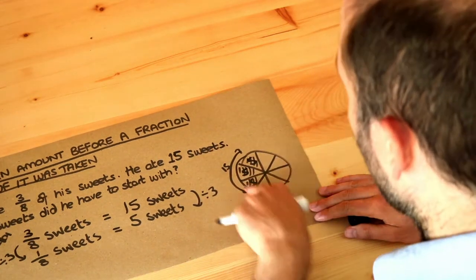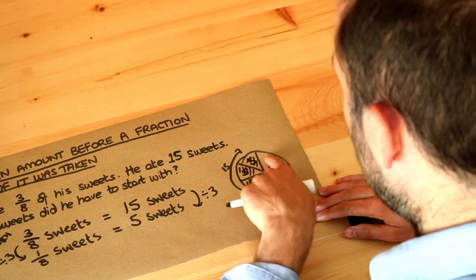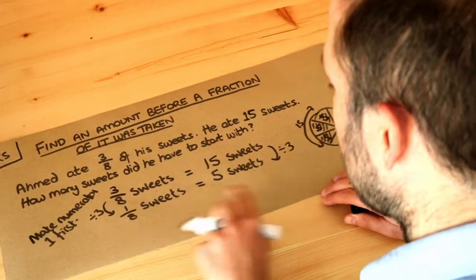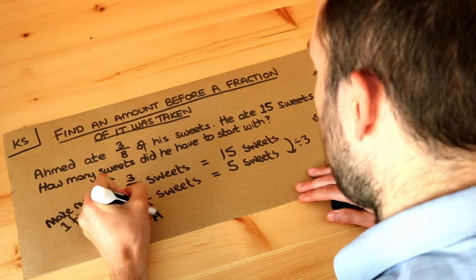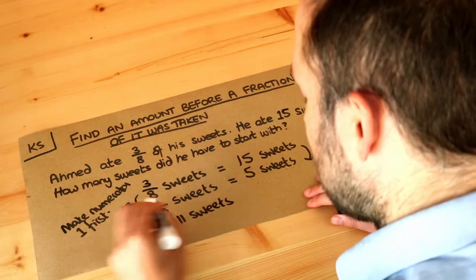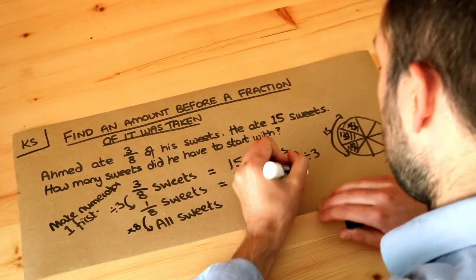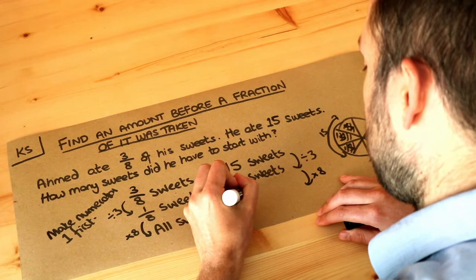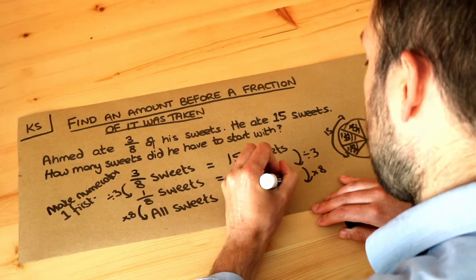And now it's quite easy to work out what all the sweets were because we've got eight slices and each is worth five so it's just going to be five times eight. So to get from an eighth of his sweets to all of his sweets we just need to times that by eight. So if we times that by eight, five times eight is forty sweets and that is the final answer.